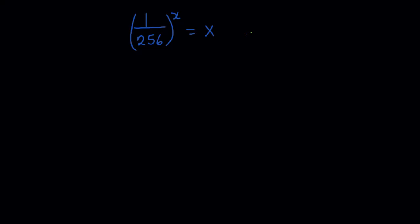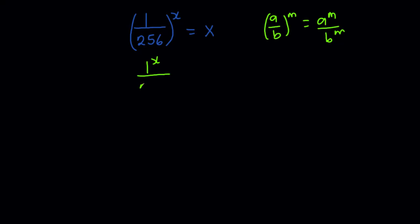I'm going to apply a general principle of algebra or indices which says that if you have (a/b)^m, this is the same as a^m divided by b^m. So what I'm going to do here is that (1/256)^x is the same as 1^x divided by 256^x, and this is equal to x.